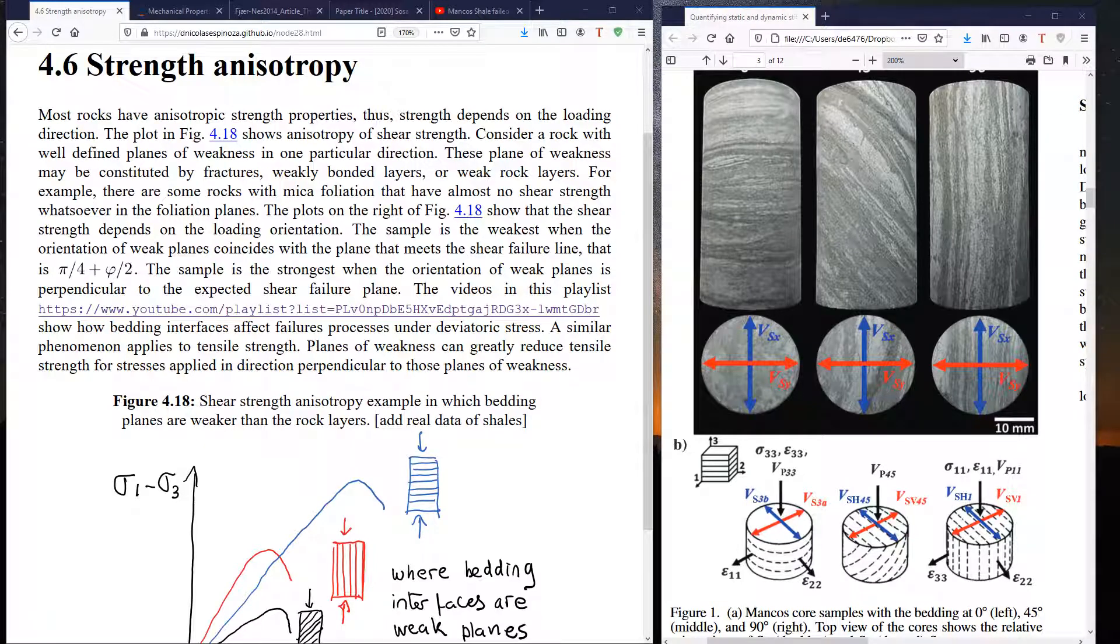In this video we're going to discuss the anisotropy in strength properties of rock. Remember that strength is the maximum stress that a material can support before having irrecoverable deformations. Let's start our discussion with shear strength anisotropy.